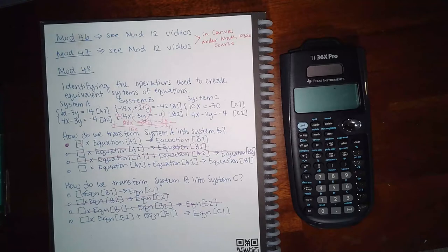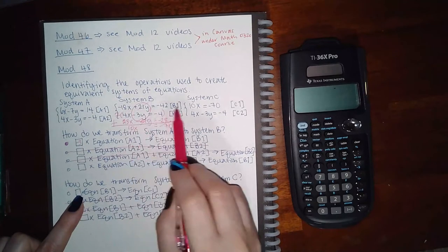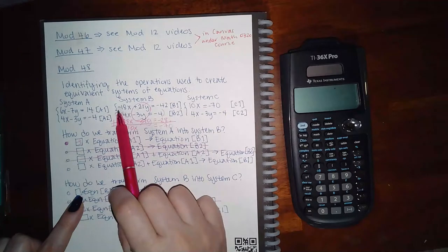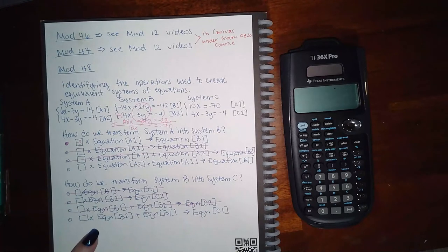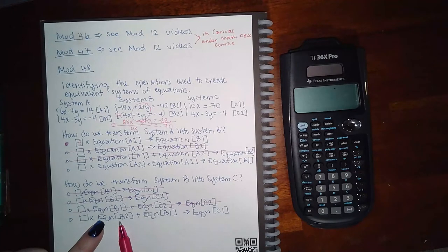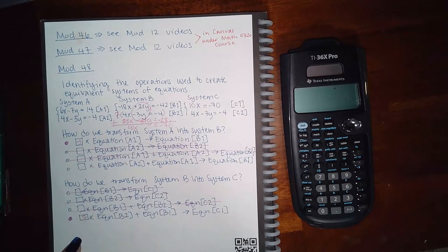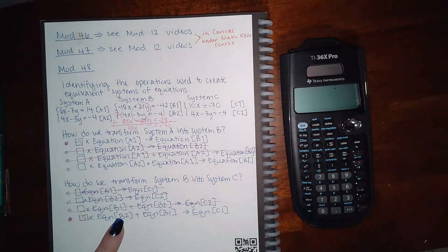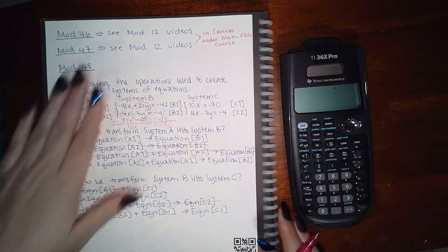So identifying what was done: I didn't multiply B1 by anything — I took B2 and multiplied it by 7, then added it to B1. That eliminated the y's and produced C1. The answer is: 7 times equation B2 plus equation B1, which replaces C1. It's important to talk through these steps because you'll be expected to write them when working with matrices.